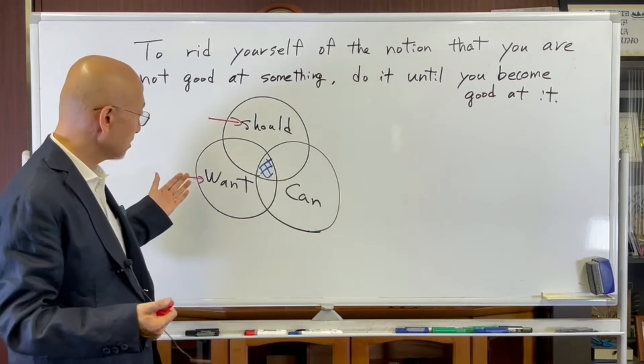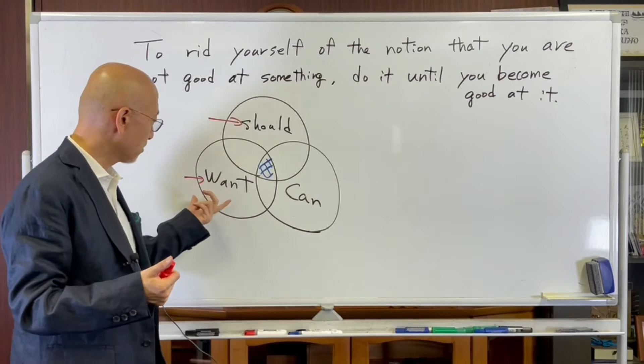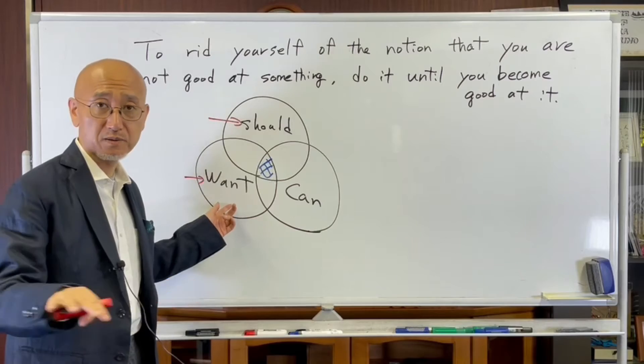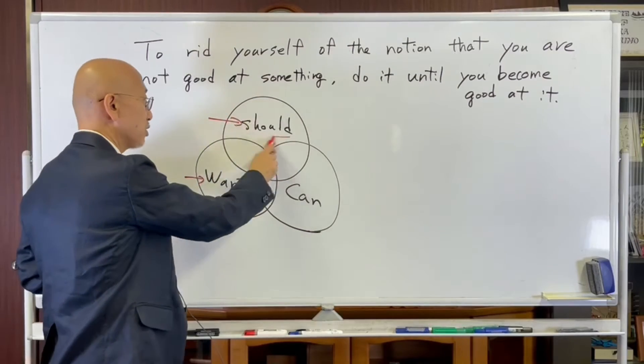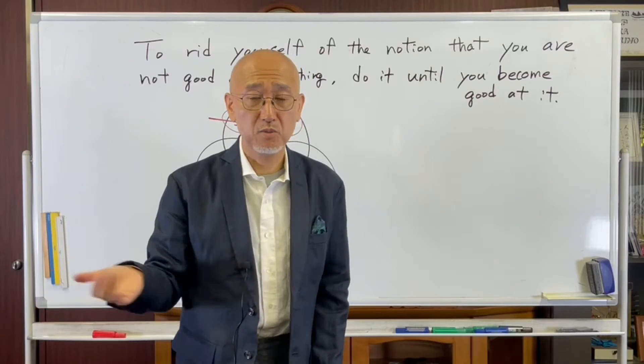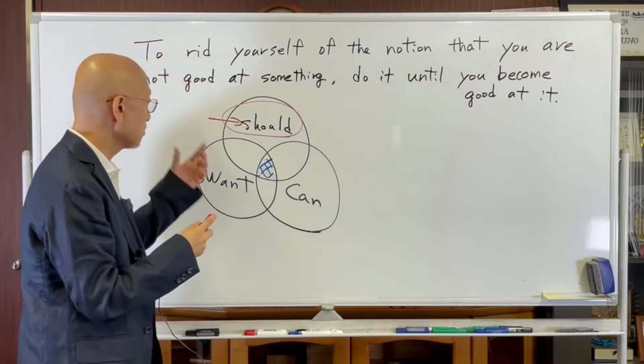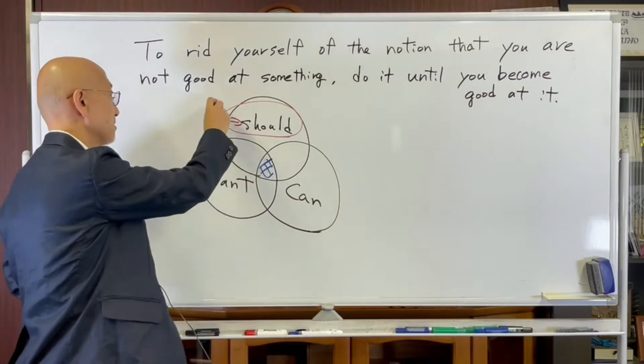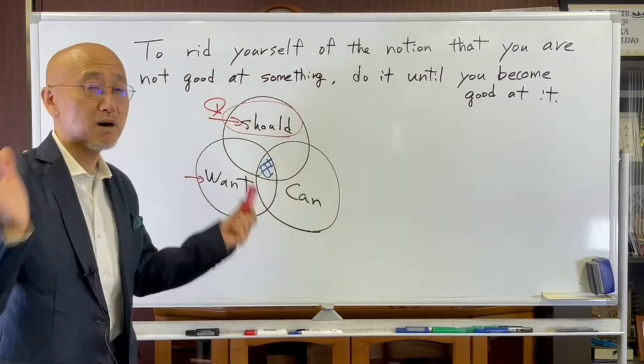So first thing, if we base it on want, this is based on our ego. But based on should—what should I do for society, for customers?—this is based on counterpart, customers or society. This is the first thing. We have to think about the market first.